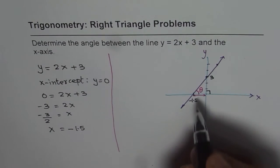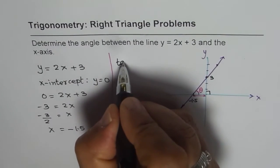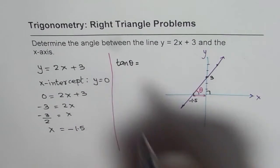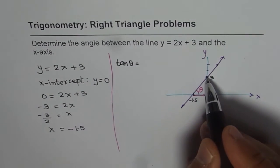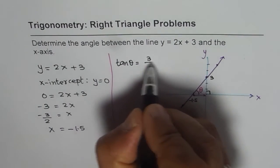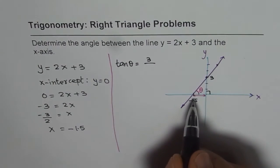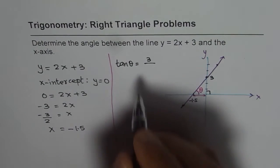So what is tan of theta? So from here, tan of theta equals opposite side which is 3 units divided by the adjacent from here to here, 1.5.